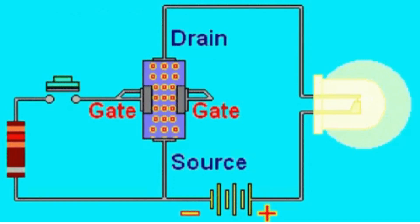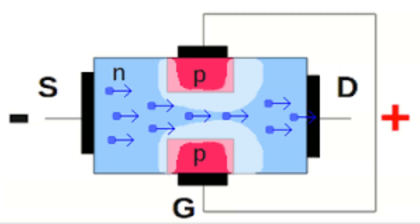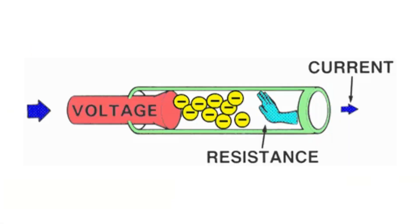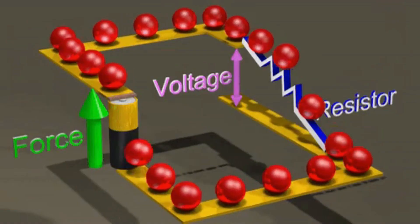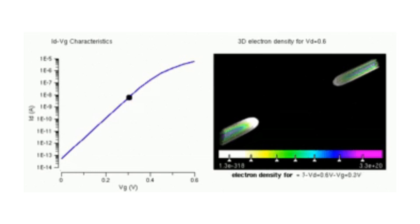As the gate terminal is electrically isolated from the main current-carrying channel between the drain and source, no current flows into the gate. Just like the JFET, the MOSFET also acts like a voltage-controlled resistor where the current flowing through the main drain channel between the drain and source is proportional to the input voltage.